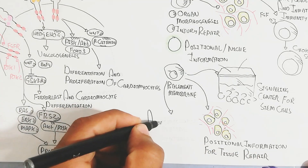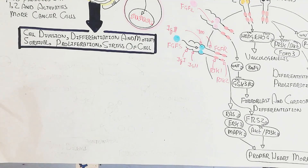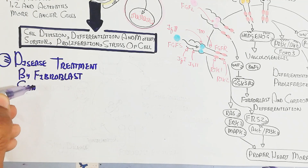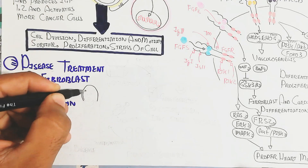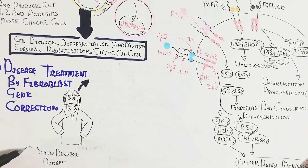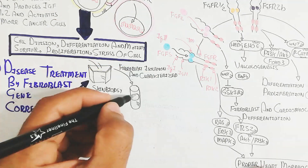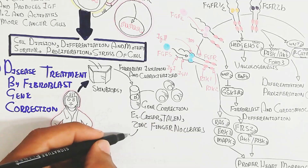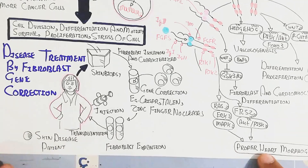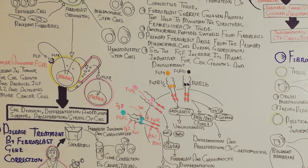After injury, tissue repair occurs through fibroblasts. Fibroblast growth factor is important for growth, differentiation, and proliferation; excess FGF production can cause cancer. For disease treatment, fibroblast gene correction is possible — for example, skin biopsy from a skin disease patient allows fibroblast isolation, characterization, gene correction using CRISPR, TALENs, or zinc finger nucleases, followed by fibroblast expansion and transplantation to cure the skin disease.